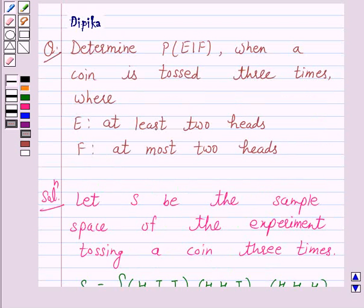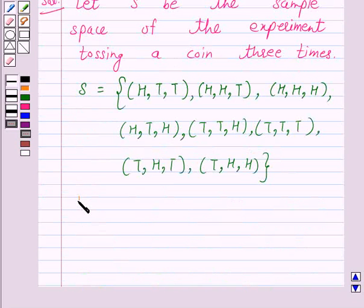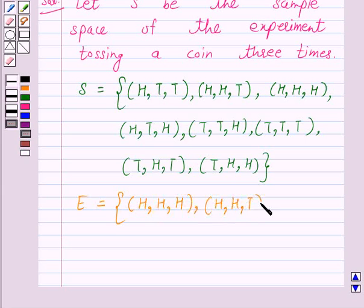Now according to the question, E is the event at least two heads and F is the event at most two heads. So E is equal to: the elements of E are HHH, HHT, HTH, and THH.